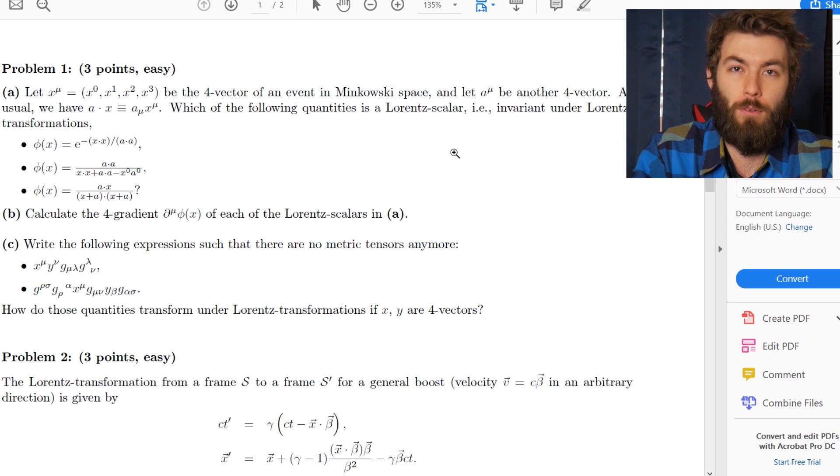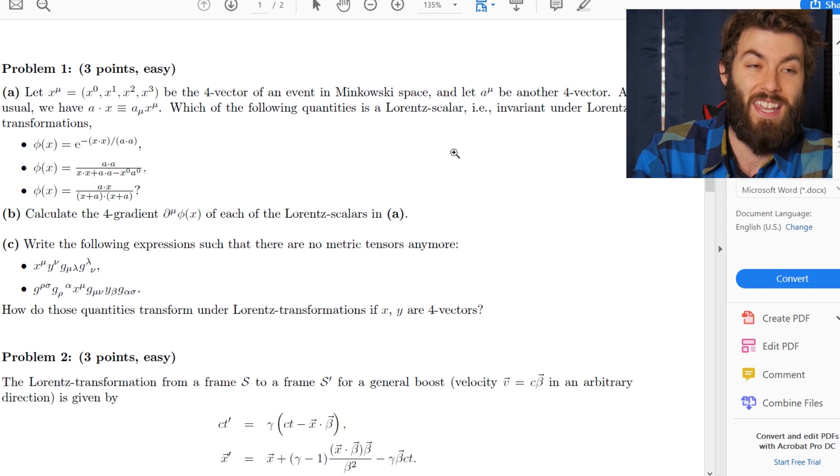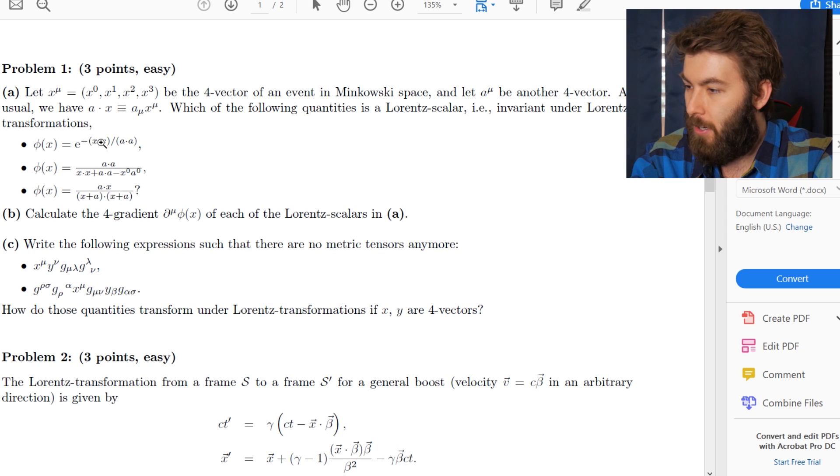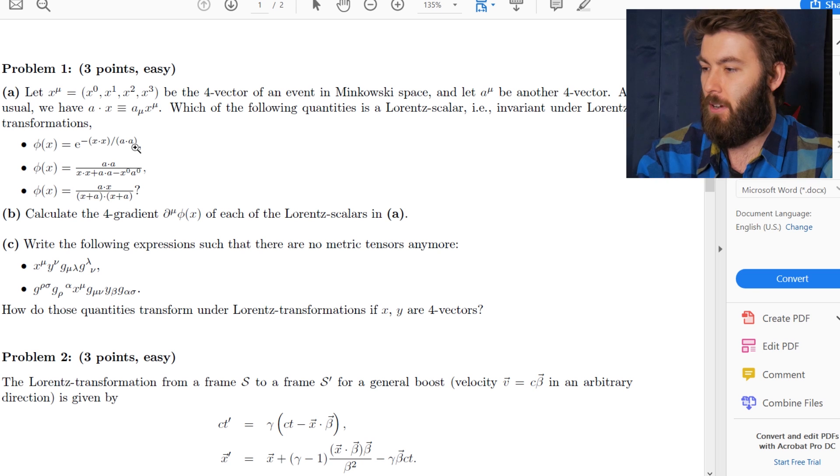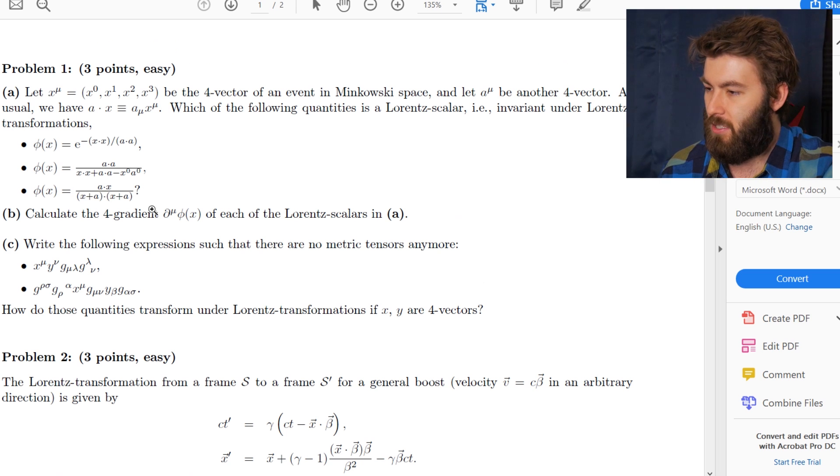I mean the product of four vectors, the dot product of four vectors, is Lorentz invariant. So if you have dot products of two things that are Lorentz invariant, that's just a number. It doesn't depend on your reference frame. So that's how you should probably approach this problem.